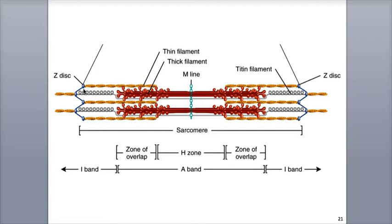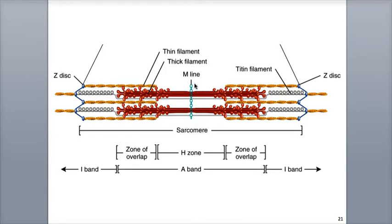The Z-discs can also be seen passing through the middle of each I-band. In the center of each A-band is a narrow H-zone, which contains only thick filaments. You can remember the H-zone because the letter H is a thicker, wider letter, and the H-zone only contains the thick filaments. In the center of the H-zone is a region called the M-line, shown here in the diagram by this chain. It consists of proteins that anchor and hold together the thick filaments.